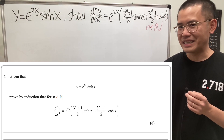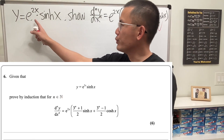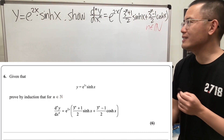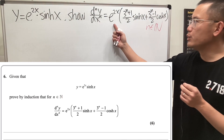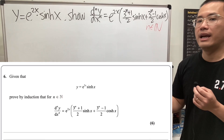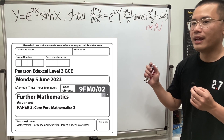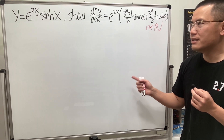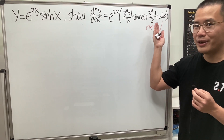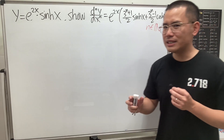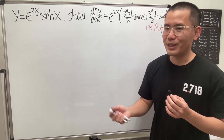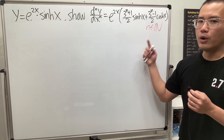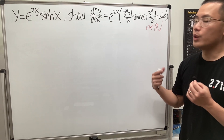I really like this question. We are given y equal to e to the 2x times hyperbolic sine of x, and then we are going to show that the nth derivative is equal to the given formula. This is from the 2023 A-level Further Math test. We have the answer right here already, so as long as we can fill in the gaps, we can get it right.